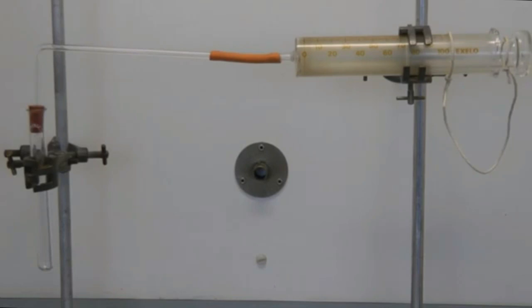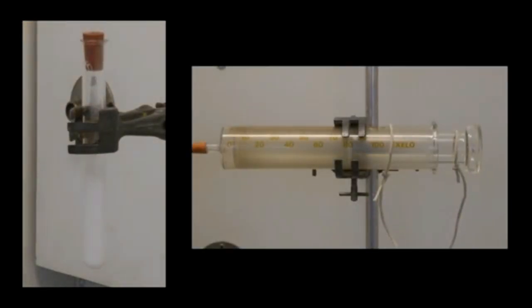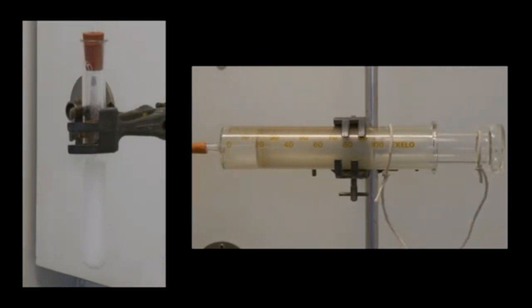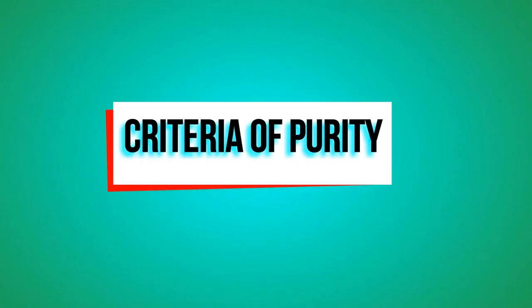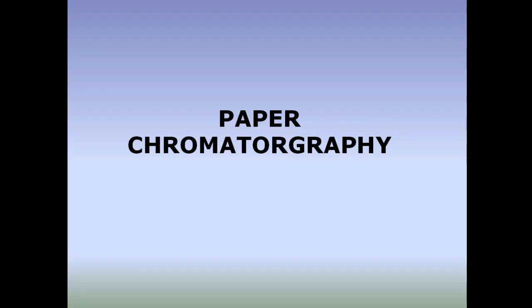See this video — inside the test tube a chemical reaction is taking place. When the reaction starts, the product that is gas is produced and reaches the syringe through a tube. You can see the syringe piston going back as the gas occupies the syringe. This is how a gas syringe is used to measure the volume of gas.